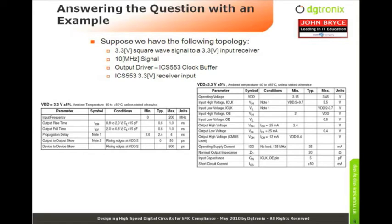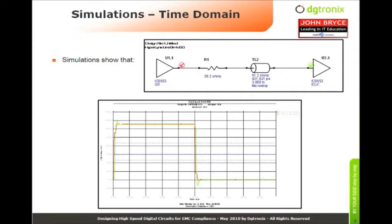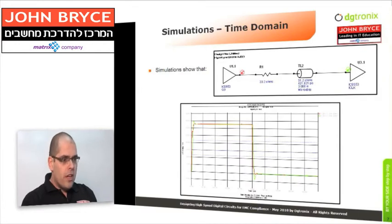In order to answer this question, let me present an example. Suppose we have the following topology: an output buffer connected to a receiver. The output buffer is oscillating at a frequency of 10 megahertz, and in the datasheet the typical rise time is about 0.6 nanoseconds and the output impedance is about 20 ohms. To prevent reflections, we use a series resistor and drive the signal in a transmission line of about 50 ohms, resulting in an almost ideal square wave oscillating at 10 megahertz.